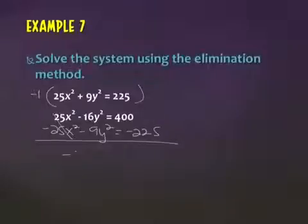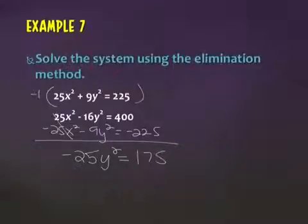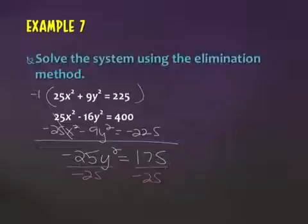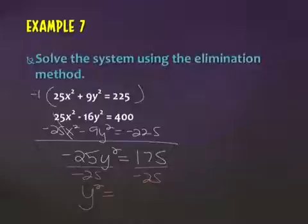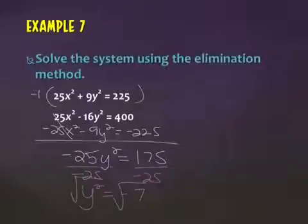This x squared term cancels. I'm left with negative 25y squared equals 175. Divide both sides by negative 25. What happens when I go to square root this? Can I square root a negative number? No — this is no solution.